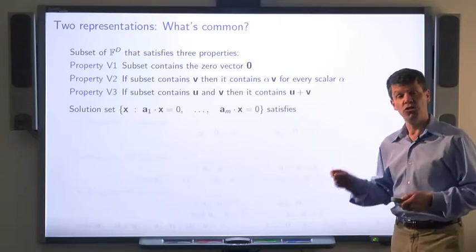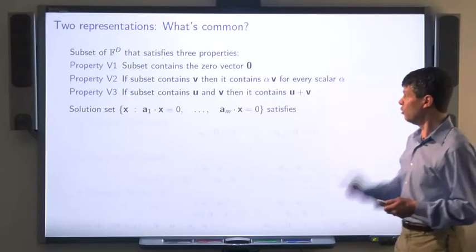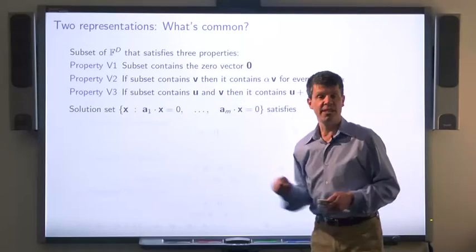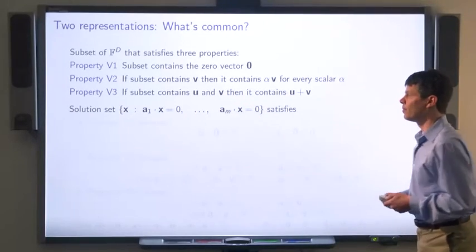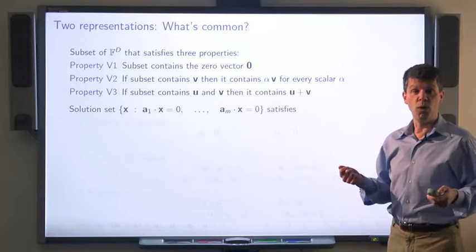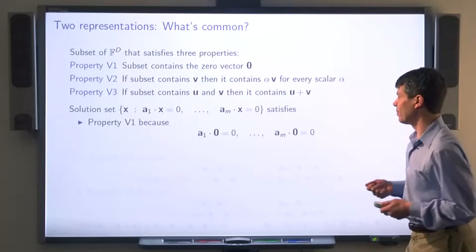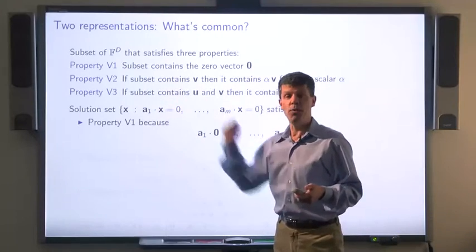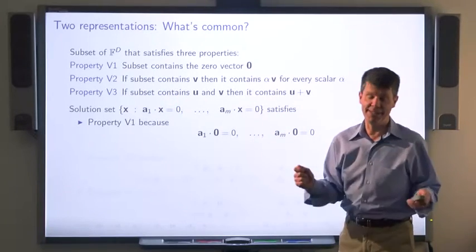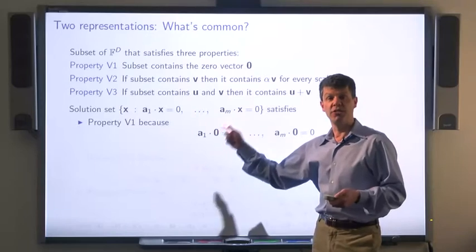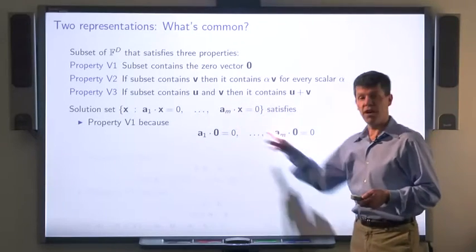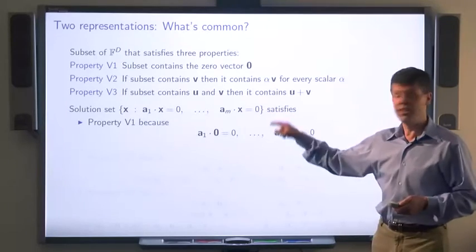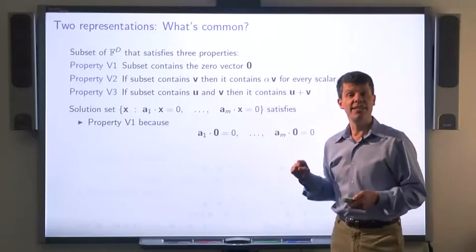Now let's turn to the other representation: the solution set of a collection of linear equations where the right-hand sides are all zero. Property V1 is also easy — take the zero vector and plug it in. a1 dotted with the zero vector is zero, a2 dotted with the zero vector is zero, and so on. So clearly the zero vector lies in this solution set.